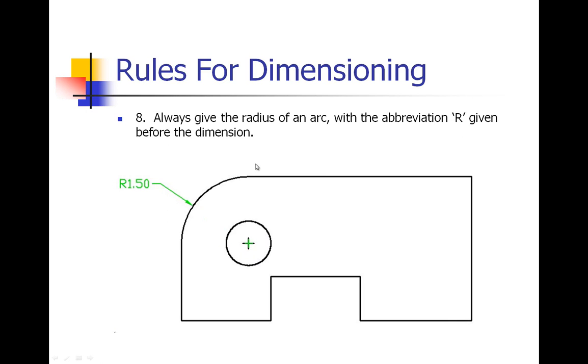Number eight: always give the radius of an arc with the abbreviation R, R standing for radius, given before the dimension. So here we are giving a dimension for this arc which is not a complete circle. It's a small piece of a circle. Because it is not a full circle we want to use a radius measurement.